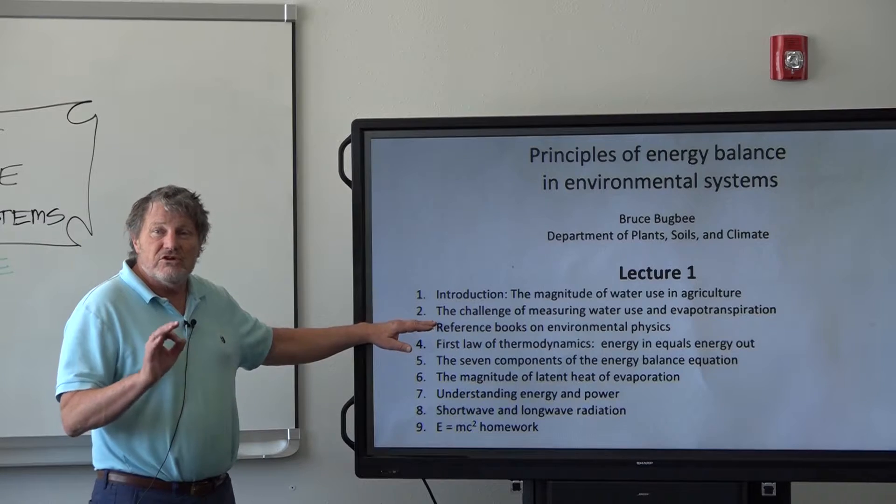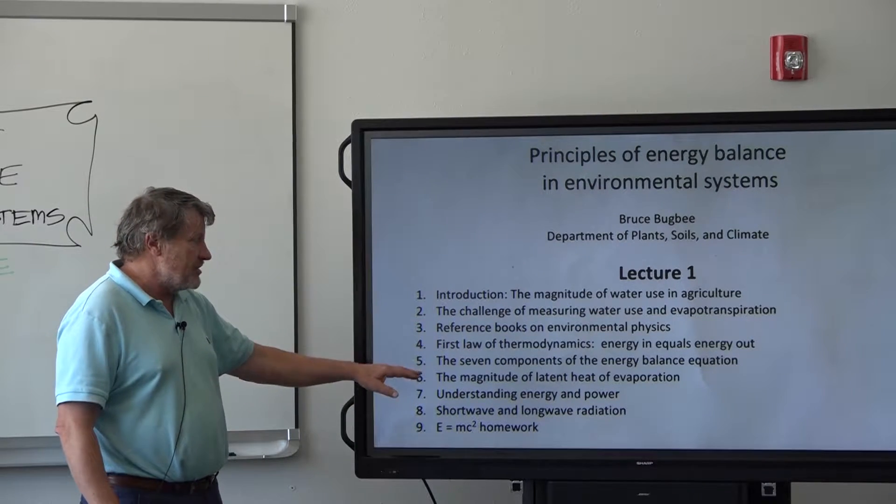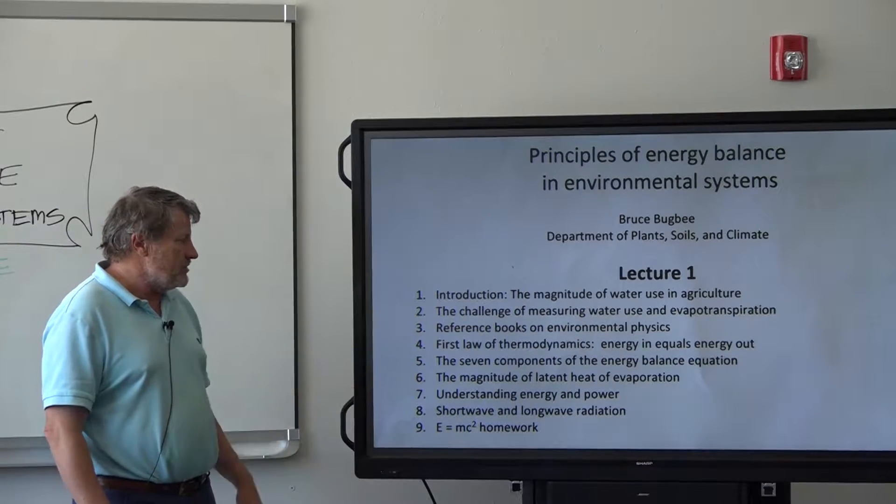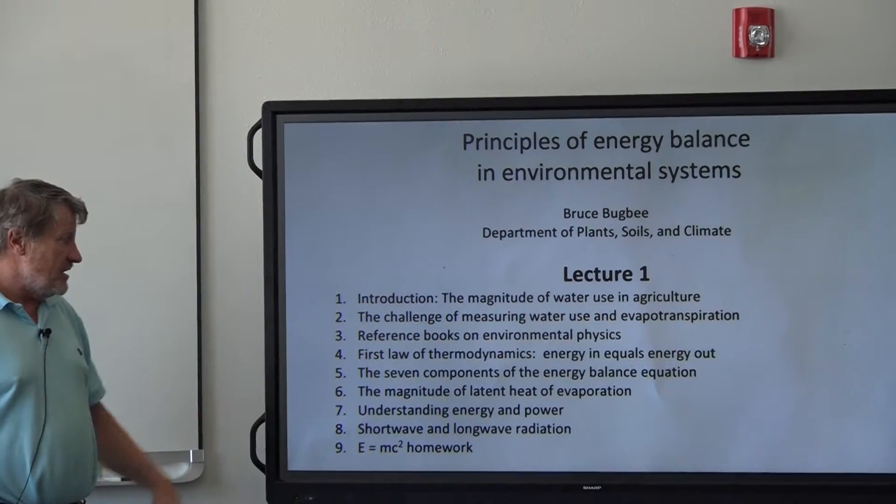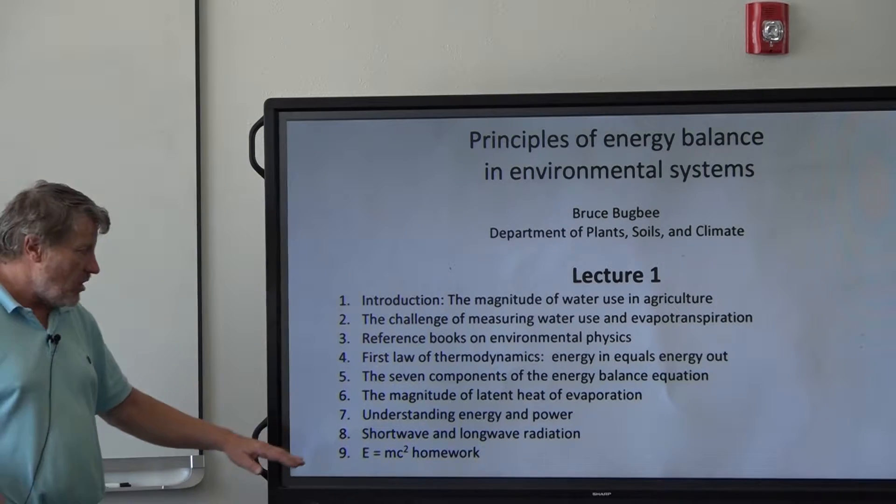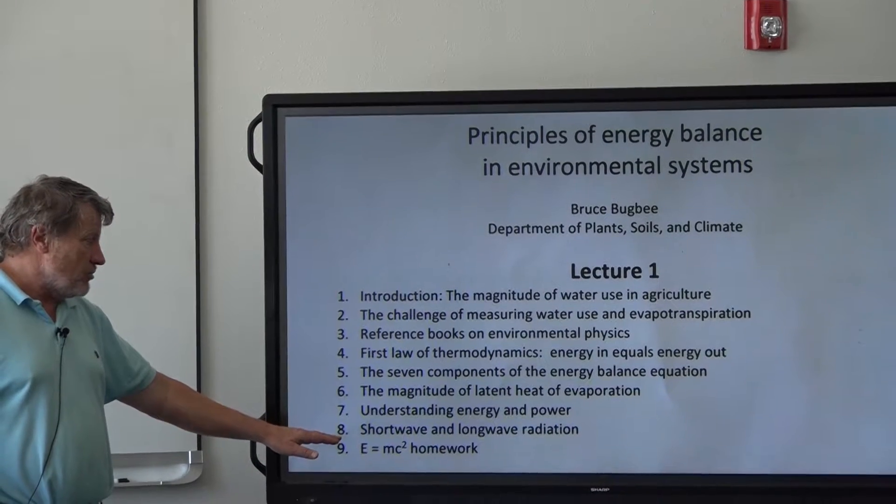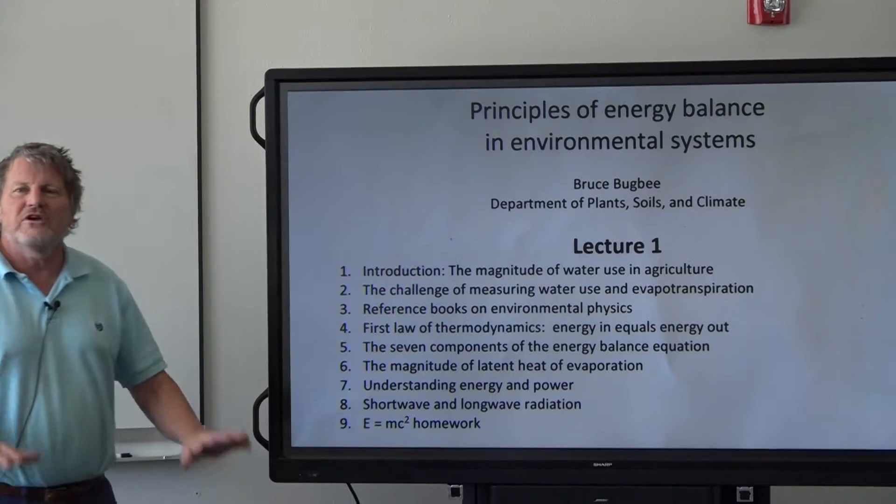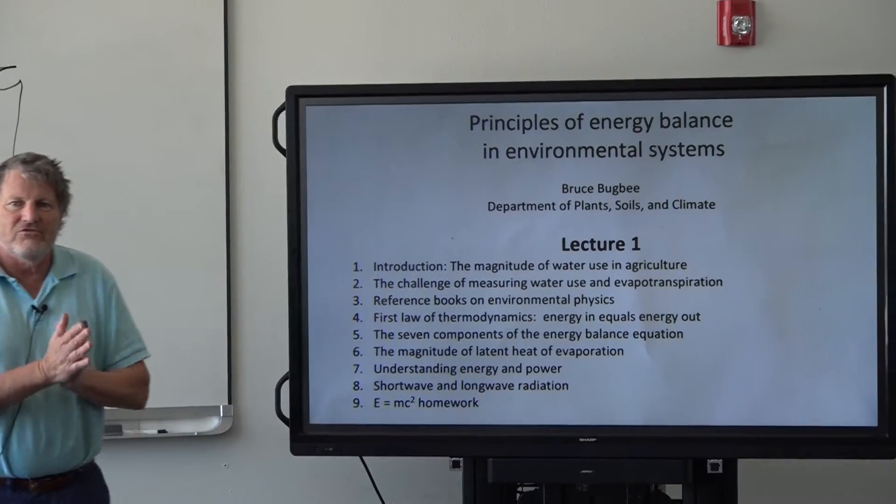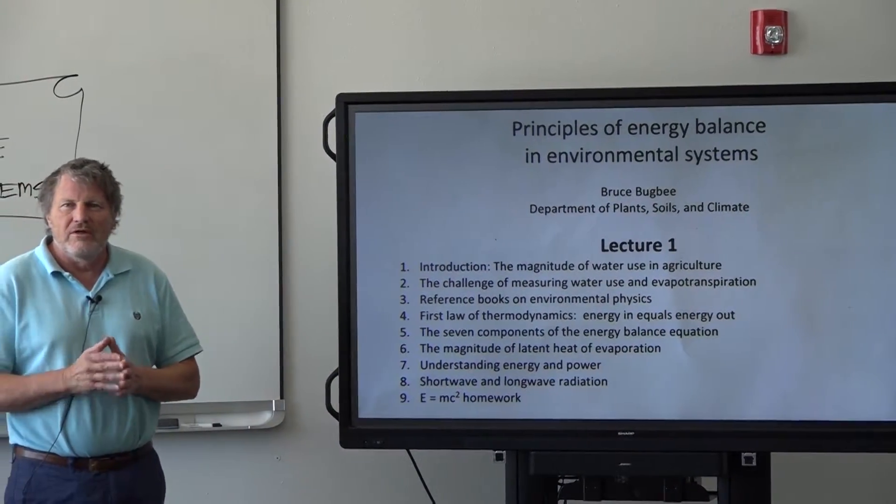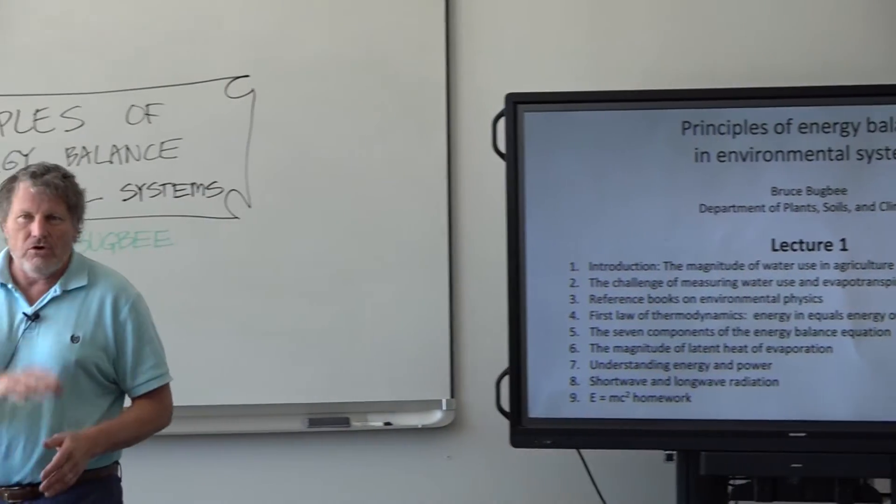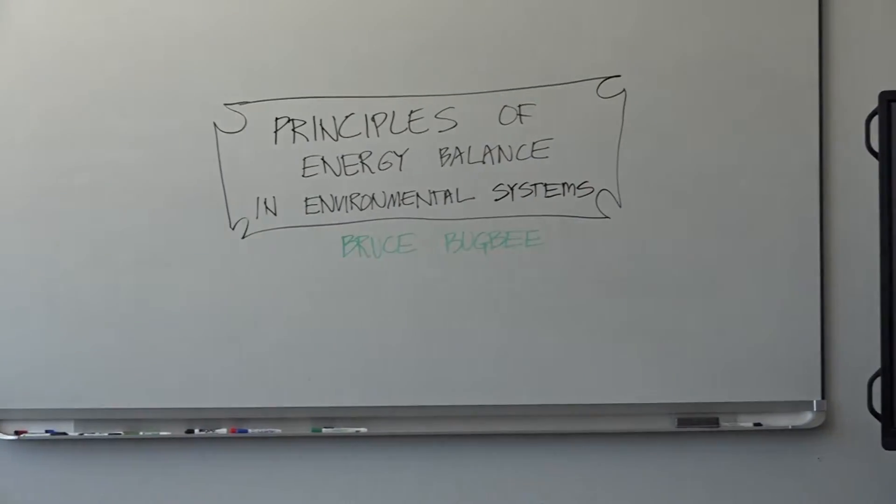Then we get into this first law of thermodynamics and the seven components, latent heat of evaporation, understanding energy and power. This is joules and watts and finally short and long wave radiation. Then we give you homework and the first homework is E equals MC squared homework. That's lecture one to let you go quickly to that and see what's in there.